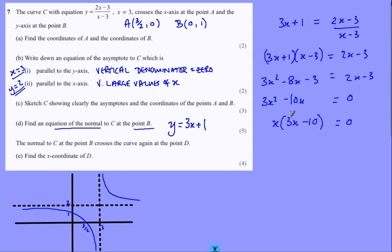Now we know x equals 0. That was point B anyway, so we don't need to worry about that one. The one we want is when this bracket equals 0 for the other point, which is x equals 10 over 3, 3 and a third. And I think the x coordinate is all we need. And there's our question finished.